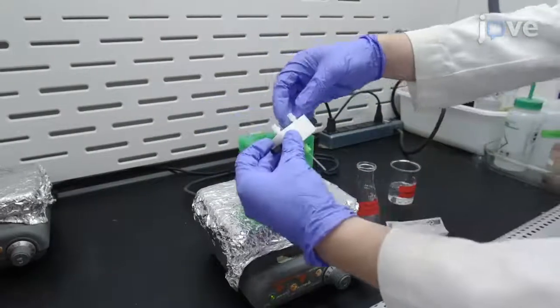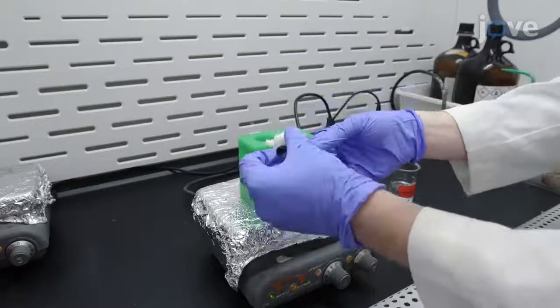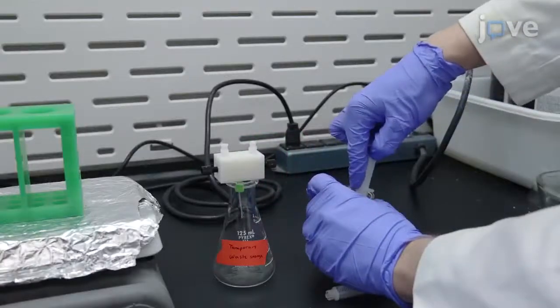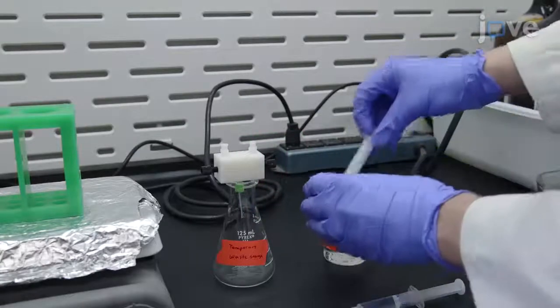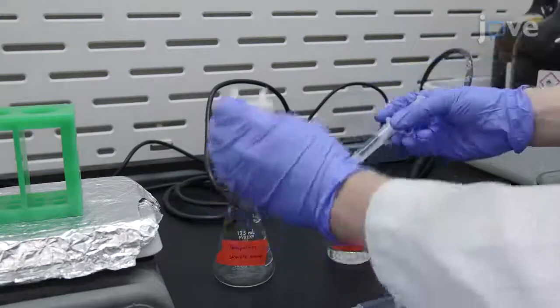Before starting the process, check the CIJ mixer fittings and ensure that the outlet tubing is not crimped. Then, fill two 5-milliliter polypropylene rubber-free luer-lock syringes with 2-3 milliliters of acetone or another cleaning solvent.